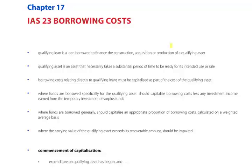Until very recently, there was an alternative treatment for dealing with borrowing costs. Companies could, if they wished, capitalise them, or otherwise expense them as they were incurred. As a result of the recent revisions, IAS 23 now requires all costs which qualify under the criteria under IAS 23 to be capitalised. Borrowing costs typically would be interest paid on loans borrowed to finance the construction, acquisition or production of a qualifying asset. A qualifying asset itself is an asset that necessarily takes a substantial period of time to be ready for intended use or sale, and borrowing costs relating directly to qualifying loans must be capitalised as part of the cost of the qualifying asset.